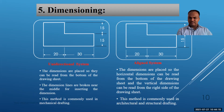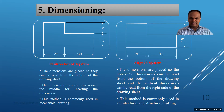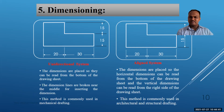The second technique is the aligned system, where dimensions can be read from the bottom or the right side. Horizontal dimensions are read from the bottom and vertical dimensions from the right side of the drawing sheet. This method is commonly used in architectural and structural drafting.